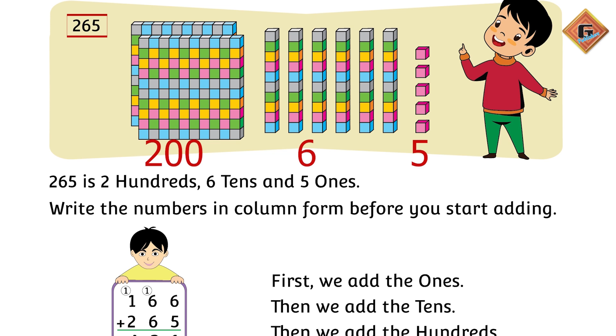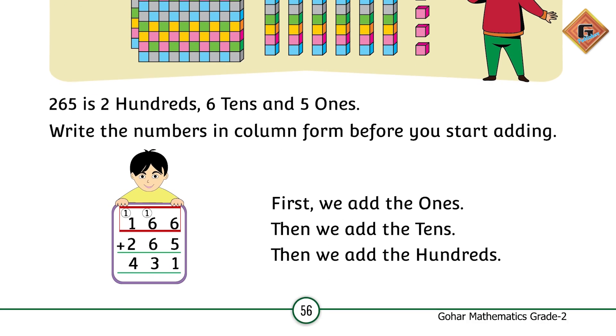Write the numbers in column form before you start adding. 166 and 265 ko humne column form mein likh liya. First we add the ones. Pehle humne ones ko add kiya. What is the answer? 6 plus 5 is 11, so we are going to write 1 in ones column and 1 we are going to regroup it. Carry kar lenge tens ke column mein.